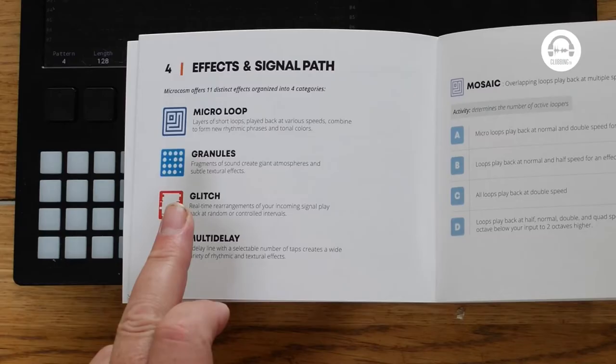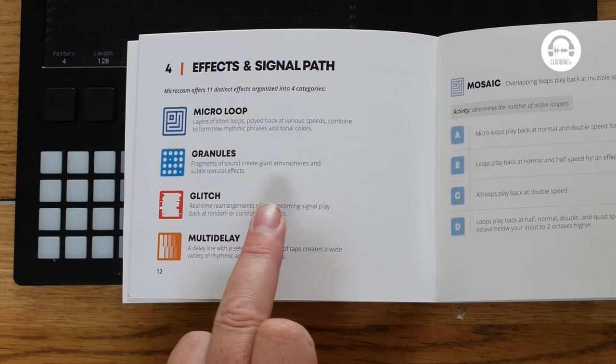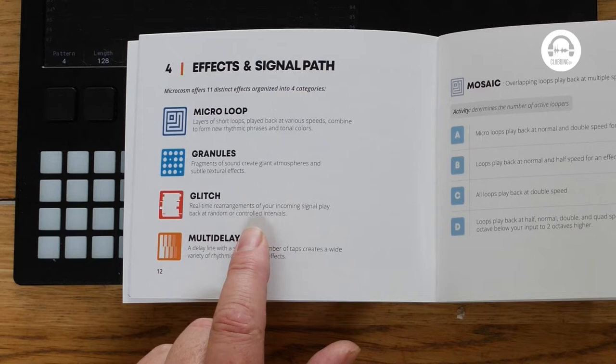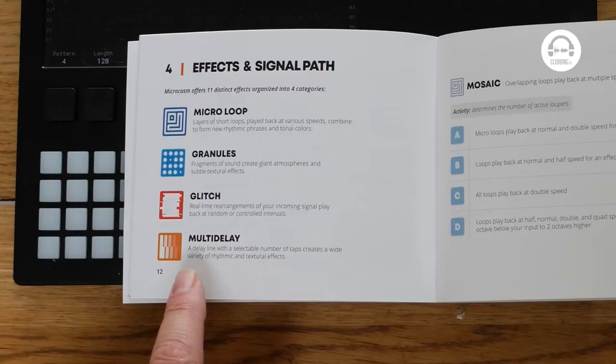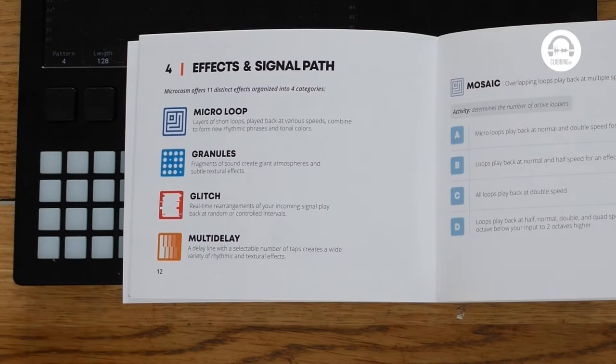In Granules, fragments of sound create giant atmospheres and subtle textural effects. In Glitch, we've got real-time arrangements of your incoming signal which play back at random or controlled intervals, so we get some really nice glitchy effects from that one. And then Multi-delay — a delay line with a selectable number of taps which creates a wide variety of rhythmic and textural effects. So they all do these really weird rhythms and textures, but each in a slightly different way.